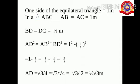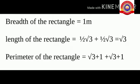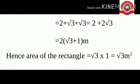Hence, AD is equal to square root of 3 by 4, which is equal to root 3 by root 4, equal to root 3 by 2, which is equal to half root 3 meter. Therefore, the breadth of the rectangle is equal to half root 3 plus half root 3, which is equal to root 3 meter. The perimeter is 2 into root 3 plus 1 meter.